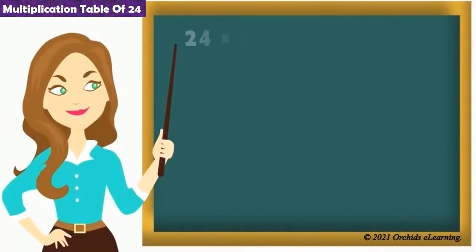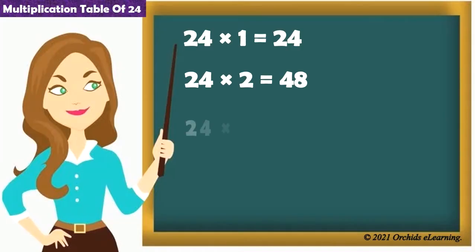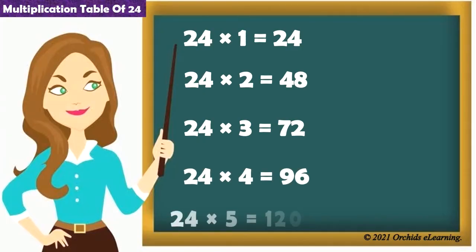24 1s are 24. 24 2s are 48. 24 3s are 72. 24 4s are 96. 24 5s are 120.